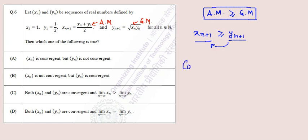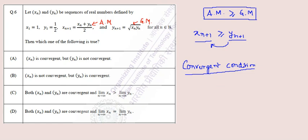We have to find whether this sequence is convergent. A sequence is said to be convergent if it approaches some limit. We need to check whether x_(n+1) and y_(n+1) are converging. We know that every monotonic bounded sequence converges and an unbounded sequence diverges. So we need the sequence to be bounded and monotonic.